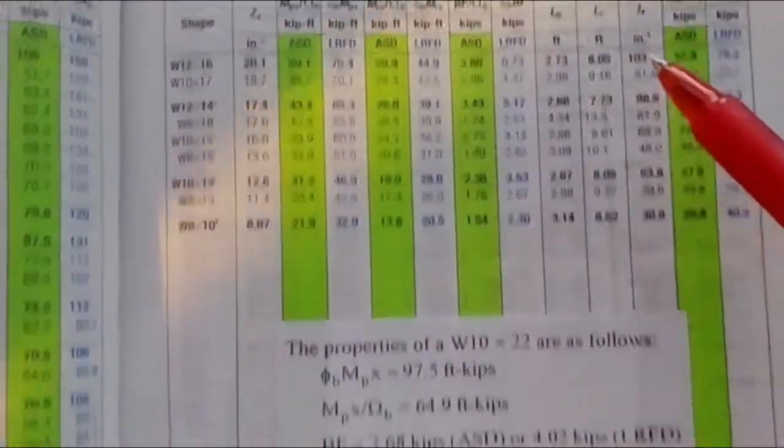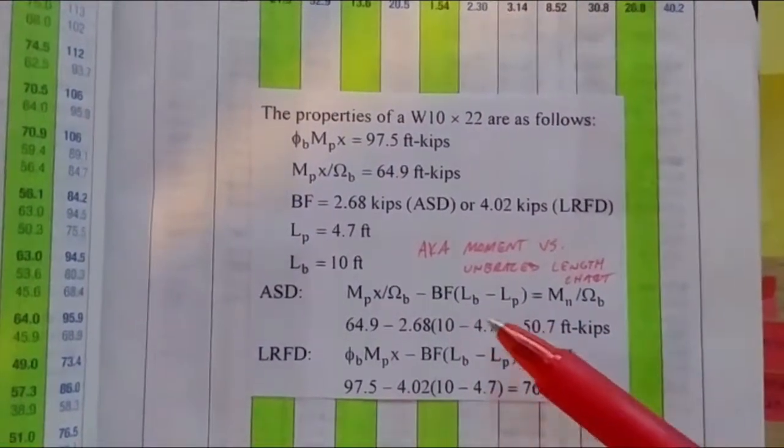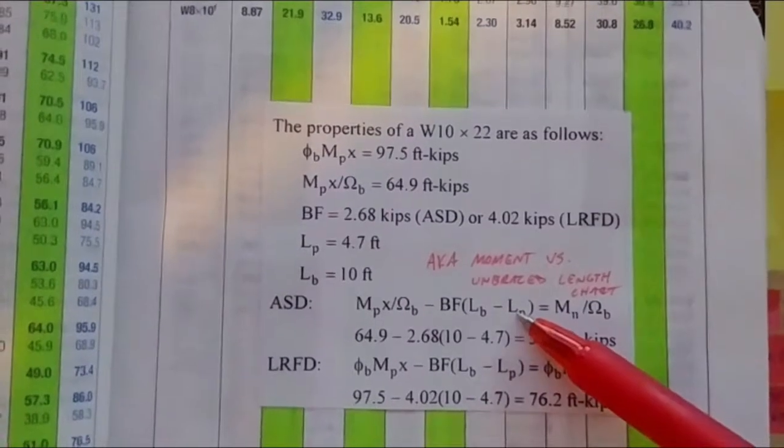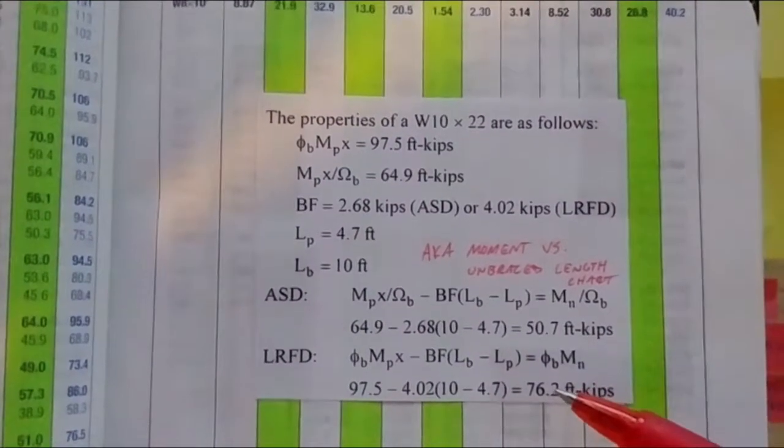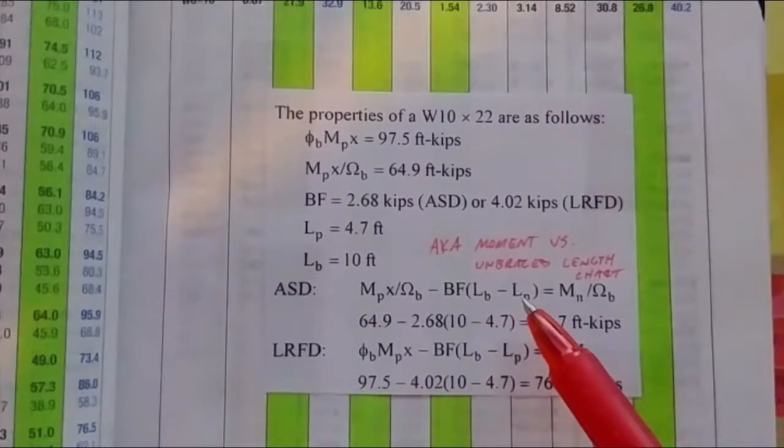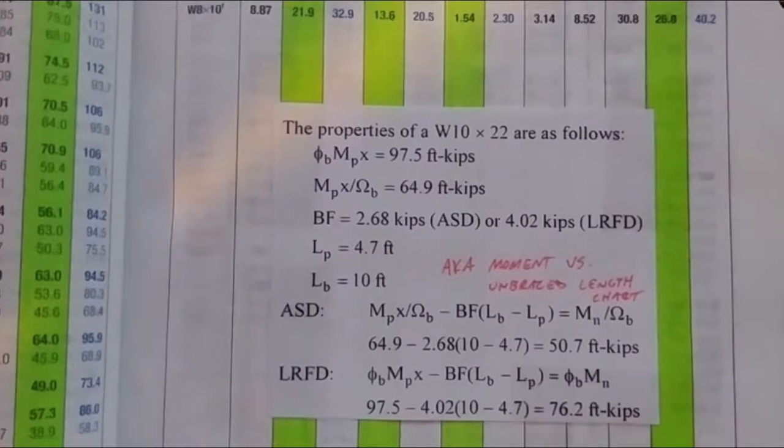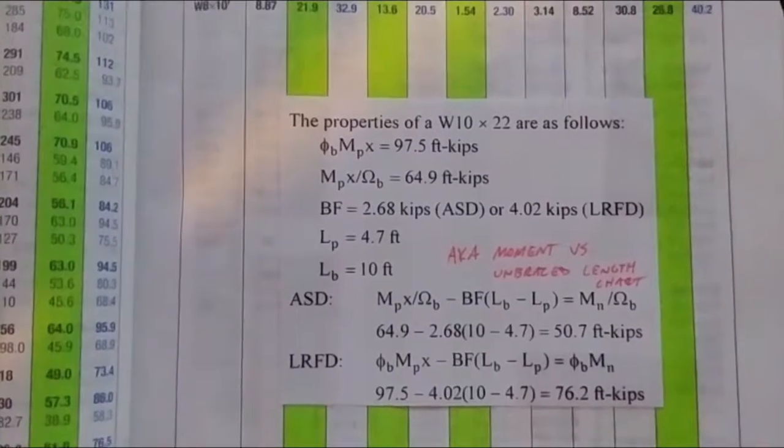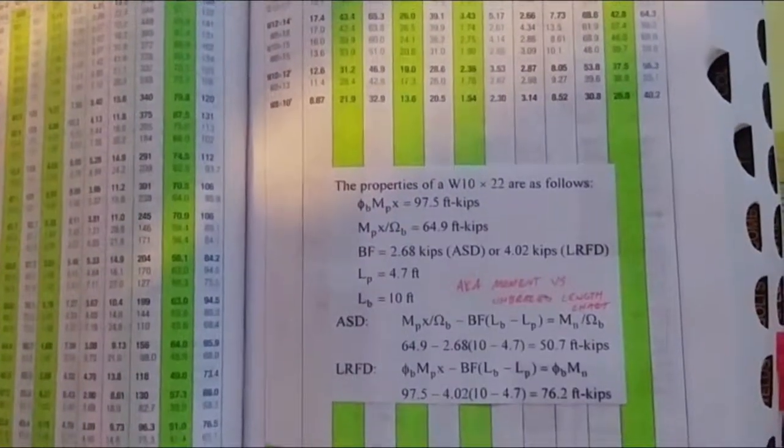Again, I'll talk about that in some later episodes, but in short, what you can do is basically pause the video. Write this down as your example, but it's really nice how it relates those L sub P, L sub B, those are your unbraced lengths, and how to apply your BF, like we saw up in the tables up here. So it's how to apply these factors into an equation that then, based on your unbraced lengths and your span distances, that's your LB, is your span distance, and then your LP, is your unbraced length, then defines what your new moment capacity is.